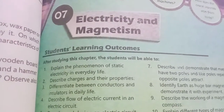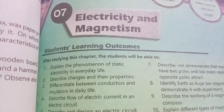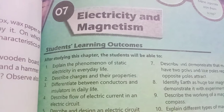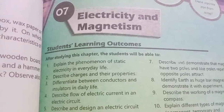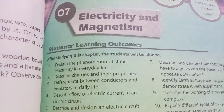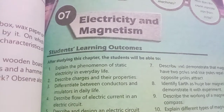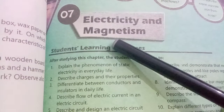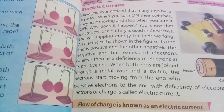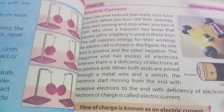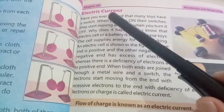Bismillahirrahmanirrahim. Asalaam alaikum dear students, I hope all of you will be fine. Today we are going to learn reading and translation of unit number seven. The name of the unit is Electricity and Magnetism, and today's topic is Electric Current.